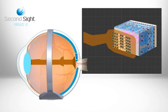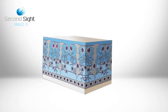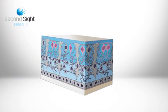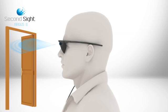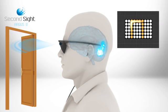These pulses stimulate the retina's remaining cells and are transmitted down the optic nerve, conveying visual information to the brain which perceives patterns of light. Patients learn to interpret these visual patterns.